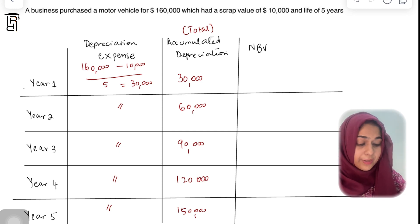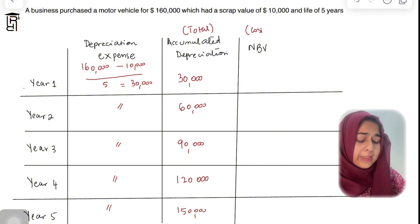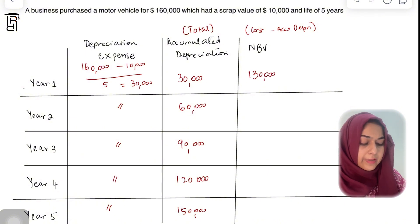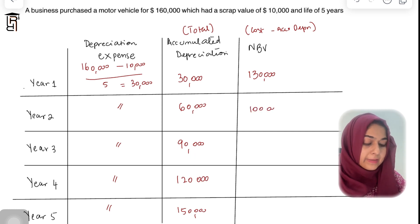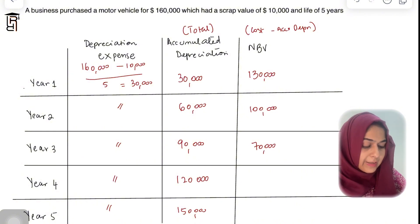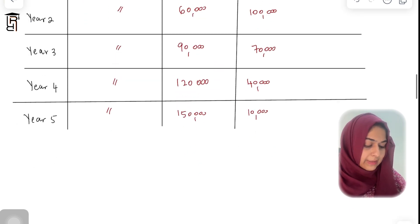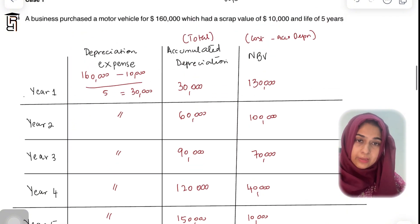The third important formula is: net book value = cost − accumulated depreciation. This is a super important formula. Cost was $160,000. After year one, NBV = 160,000 − 30,000 = $130,000. After year two: 160,000 − 60,000 = $100,000. After year three: $70,000. After year four: $40,000. After year five: 160,000 − 150,000 = $10,000, which equals the scrap value.